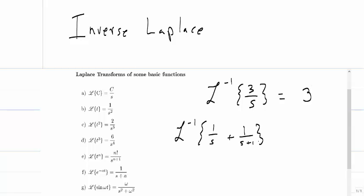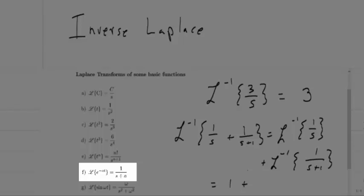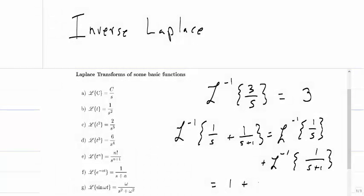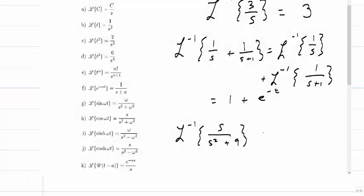If I wanted to find the inverse Laplace of 1 over s plus 1, I could use linearity to split it as the inverse Laplace of 1/s plus the inverse Laplace of 1/(s+1). That gives 1 plus e to the negative t, since a equals 1. For the inverse Laplace of s over s² plus 9, that looks like a cosine. Since omega² must equal 9, omega equals 3, so this is simply cosine of 3t.